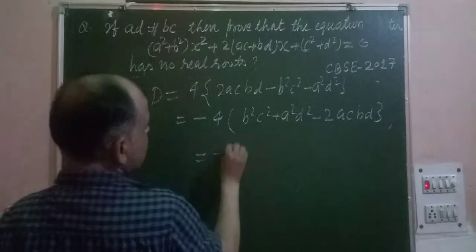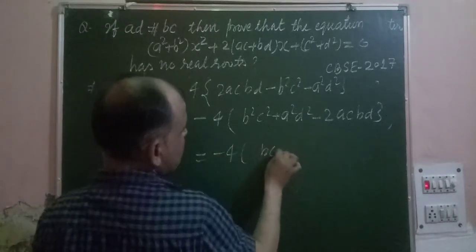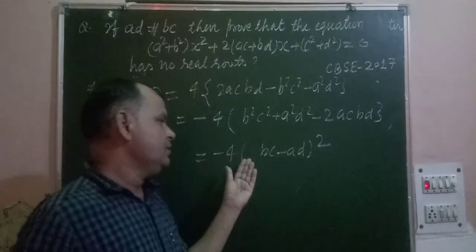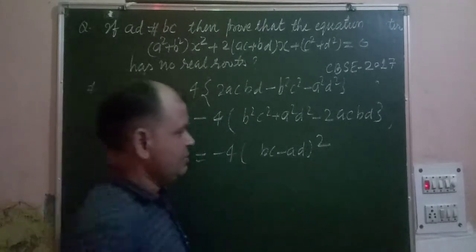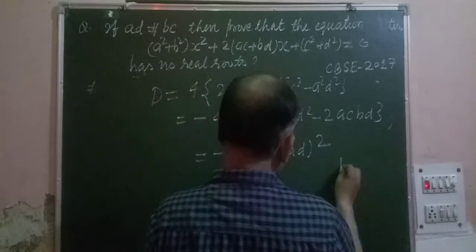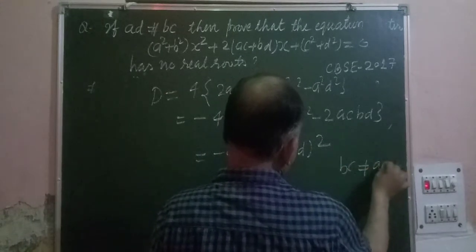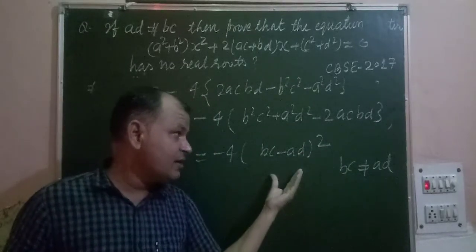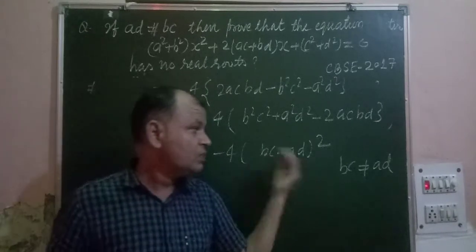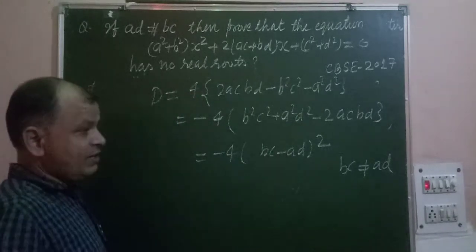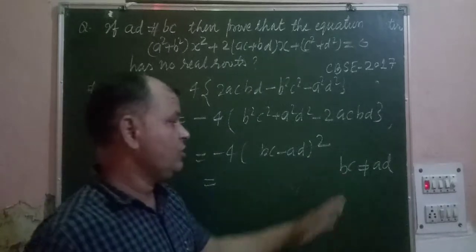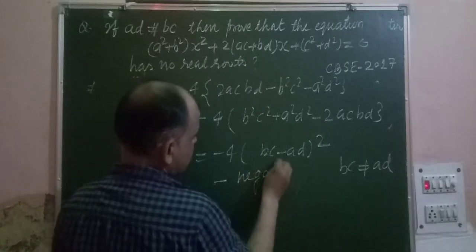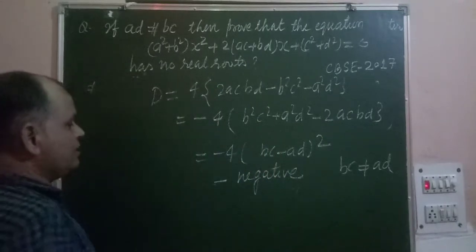So the discriminant equals -4(BC - AD)². Now, since it is given in the question that AD does not equal BC, that means BC - AD is not equal to zero. Therefore (BC - AD)² is positive, and the entire expression -4(BC - AD)² is negative. So the discriminant D is less than zero.